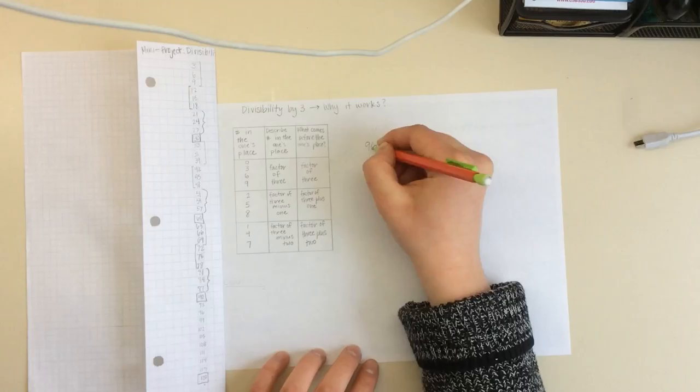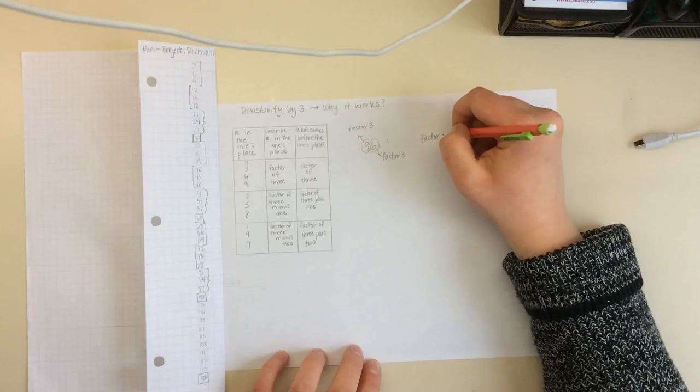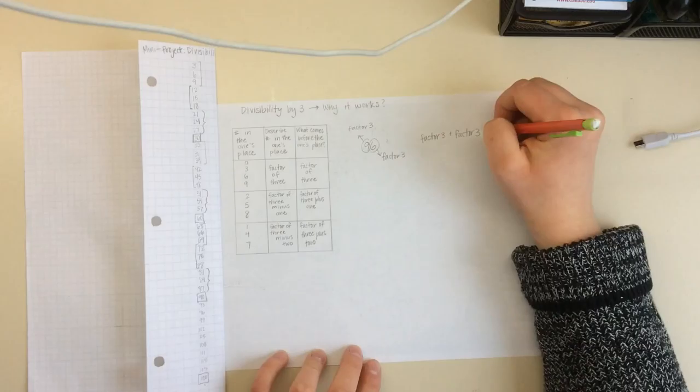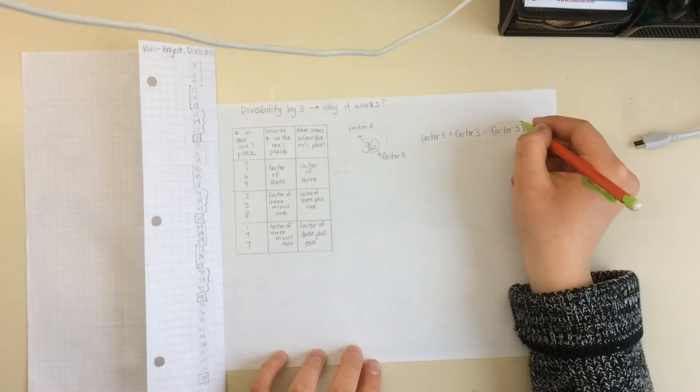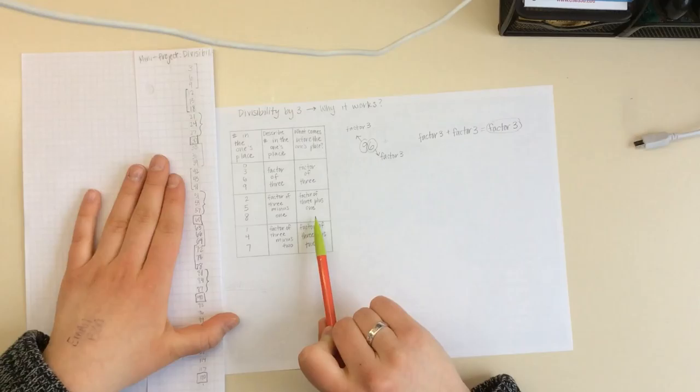So if we look at an example, say we have 96. We have 6, which is going to be a factor of 3. And then we have 9, which is a factor of 3. And now because we'd be adding these digits together just to see if it's divisible, we have a factor of 3 plus another factor of 3. We know that will give us another factor of 3 when we add them together, so our number 96 is going to be divisible by 3.